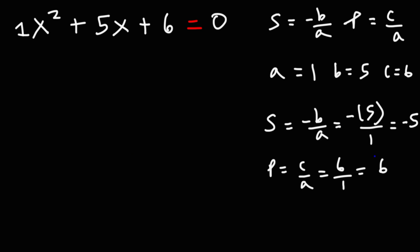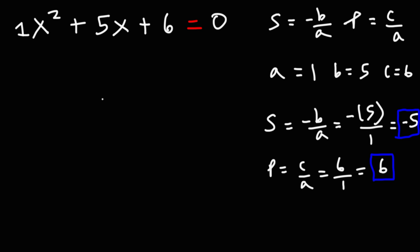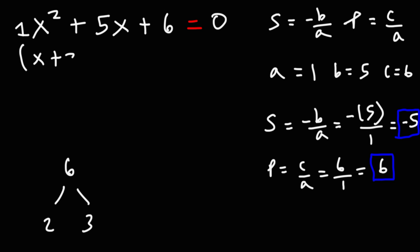We can confirm these two answers if we actually find the two roots. Let's go ahead and factor this expression. Multiply 1 times 6 to get 6, then find two numbers that multiply to 6 but add to the middle coefficient 5. Those two numbers are positive 2 and positive 3, so the factored form is x plus 2 times x plus 3.